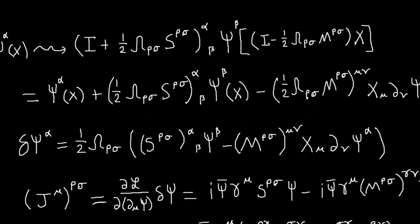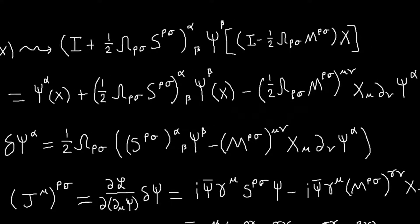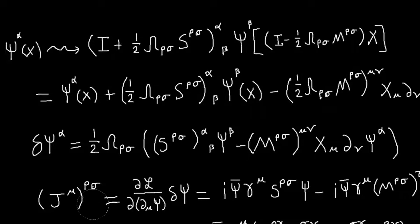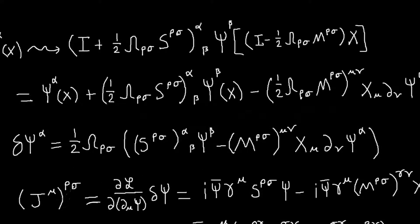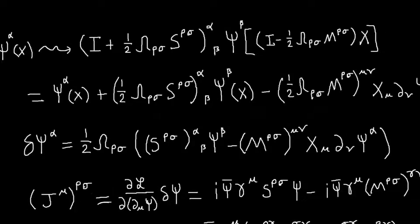And just like before when we did the Lorentz transformations for the Klein-Gordon field, we saw that the conserved current we got was really the sum of six independently conserved currents, and the same thing happens here.